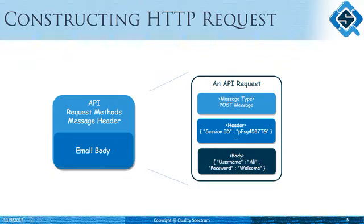Now let's have a closer look at the API headers. The request method corresponds to different message types available for any HTTP message. The most common ones are a POST message and a GET message — a POST message meaning some information has to be sent to the server, and a GET message meaning that the server needs to send some information back for the client to consume.